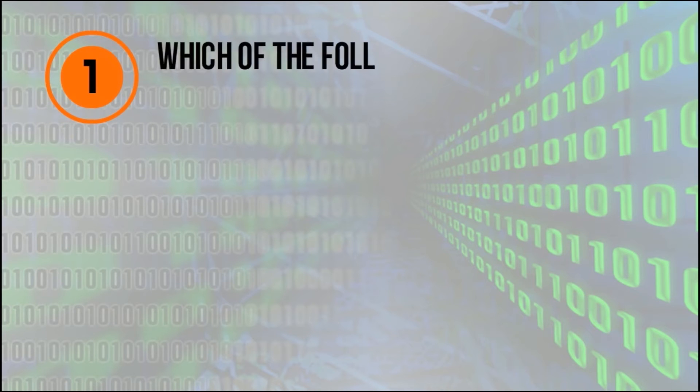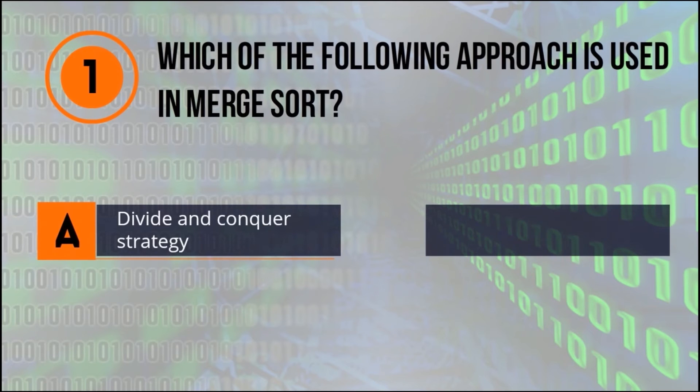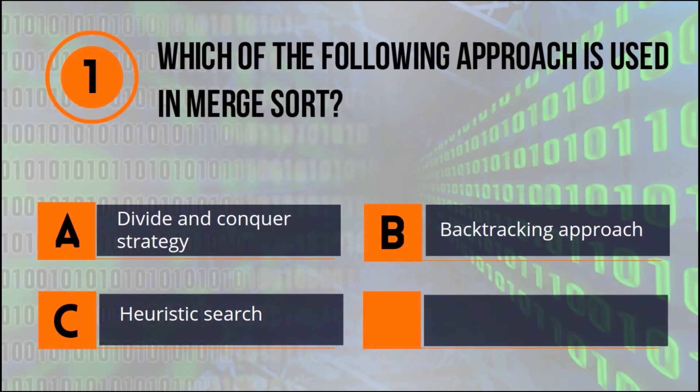First question: which of the following order is used in merge sort? A: divide and conquer, B: backtracking approach, C: heuristic search, D: greedy approach. Please click on your chosen answer.